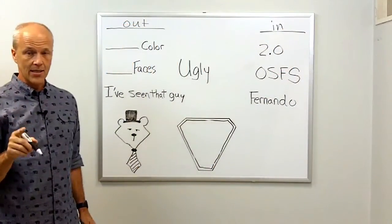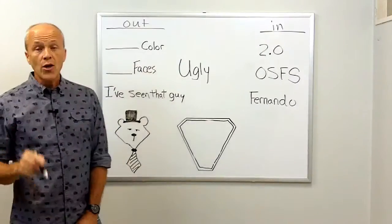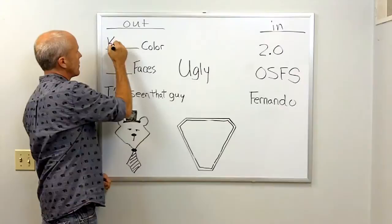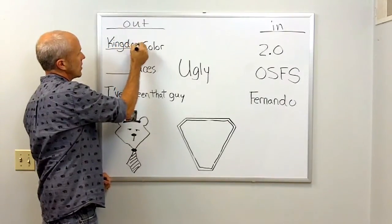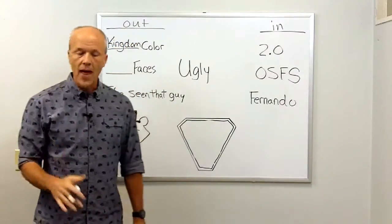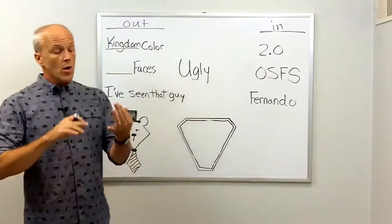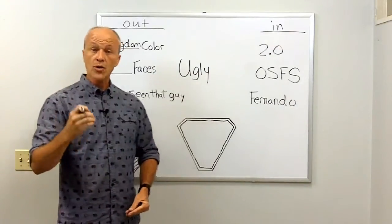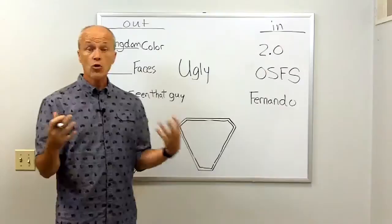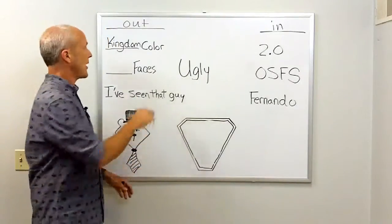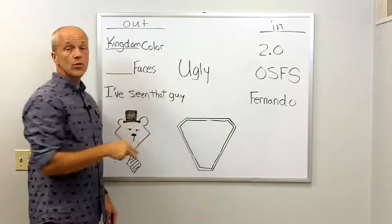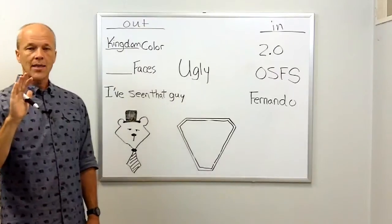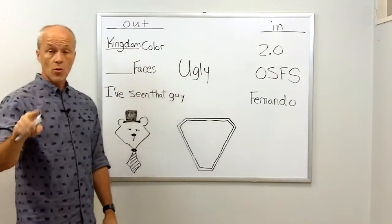Let's get started with outside ugliness. One of the fastest ways you can make your site ugly on the outside is an overuse of kingdom color. What I mean by that is there are colors the church uses: royal blue, purple, maroon, deep red. Those are colors sometimes associated with Jesus. It's a great thing for the Easter cantata, but not such a good thing for your church website. If you've overused or exclusively used kingdom colors on your site, it's a great way to get started down the path of an ugly church website.